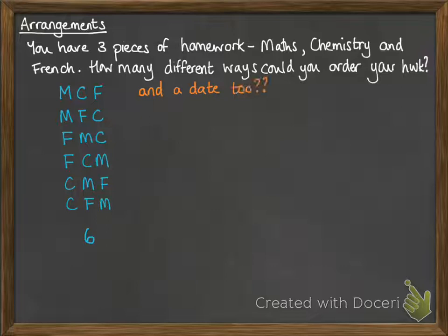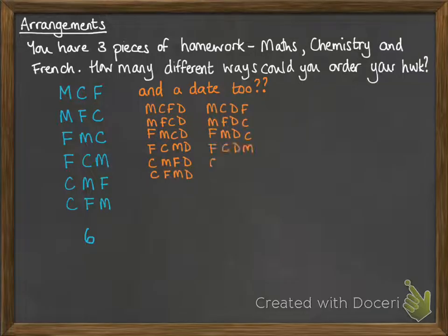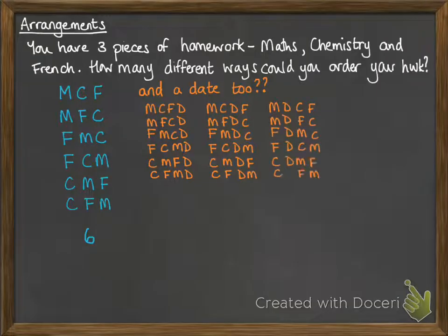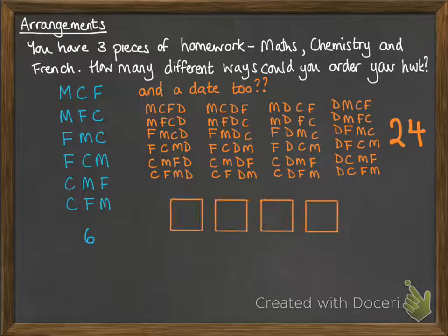Now what if you also had a date lined up and you need to go out? Where could we fit that date in? So ordering the pieces of homework, we could maybe put the date in last, or we could put it in third, or we could put it in the second place, or maybe you want to prioritize and do the date first and then your homework. So there are 24 ways that you could do that.